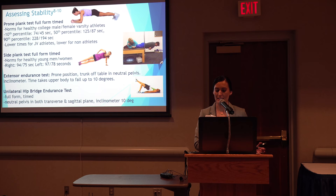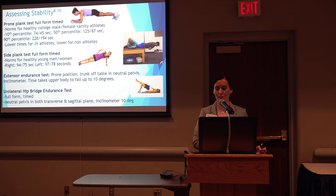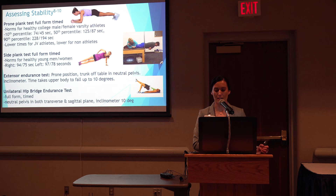We also have timed plank tests assessing core stability. It is crucial that the rater identifies compromised form and stops the test when this occurs. You can place your hand on the lumbar spine or use a bubble inclinometer — movement should not exceed 10 degrees to assess lumbar extension with fatigue. Normative data is available for prone and side plank tests for males and females. The extension endurance test also has normative data published. A unilateral bridge test was found to correlate with lab biomechanical measures of core stability, though it is limited by normative data.